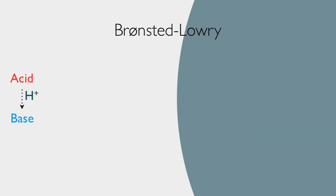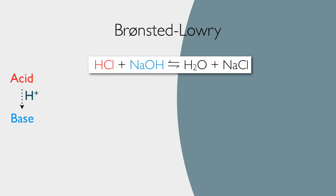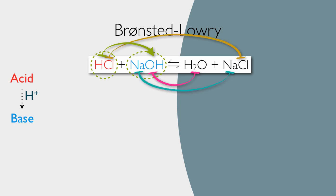Let's look at Bronsted-Lowry Theory. Here we have hydrochloric acid reacting with sodium hydroxide to give water and salt. The hydrochloric acid is going to donate its proton to the sodium hydroxide. After the OH part of sodium hydroxide receives the proton, it turns into water. Meanwhile, the sodium and the chloride, liberated from their previous partners, ionically bond to each other. Now that's just a side show.